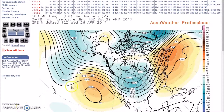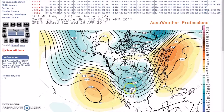We still have our ridge over the East Pacific along the East Coast and the Western Atlantic, and we have a broad, deep trough across the Rockies in the Central U.S. We also have a trough near the Aleutians.